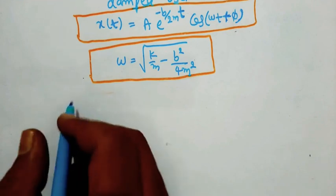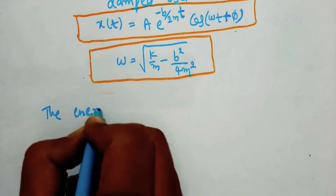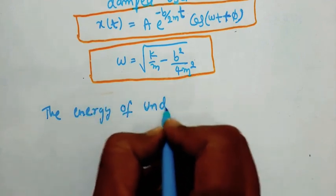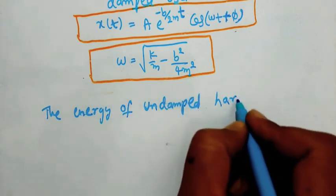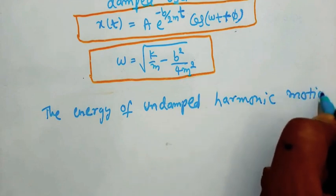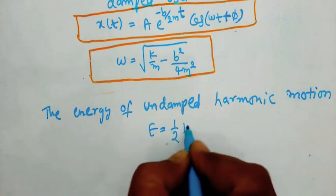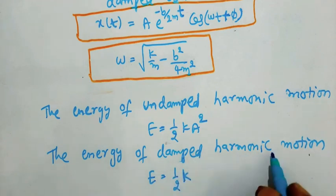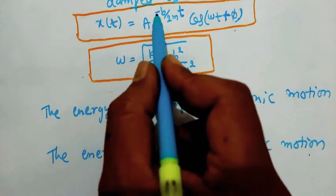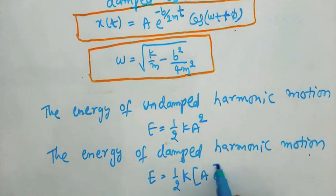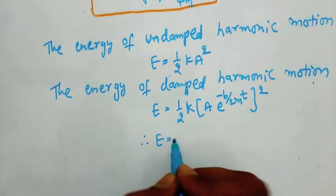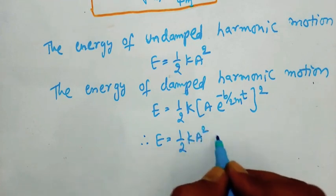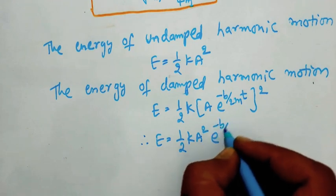We know the energy of undamped harmonic motion: E equals half k A squared. But the energy of damped harmonic motion is half k times the amplitude squared, where the amplitude is A times e to the power of minus B by 2M into t. So E equals half k times A² times e to the power of minus B/M into t.